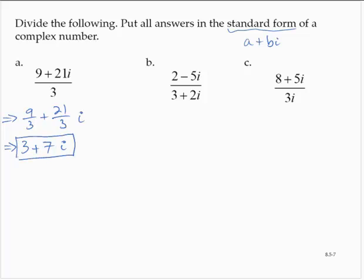Exercise B is a little bit tougher. 2 minus 5i divided by 3 plus 2i. The first thing we're going to do is make this one look more like exercise A. And to do that, we need to get a real number in the denominator.